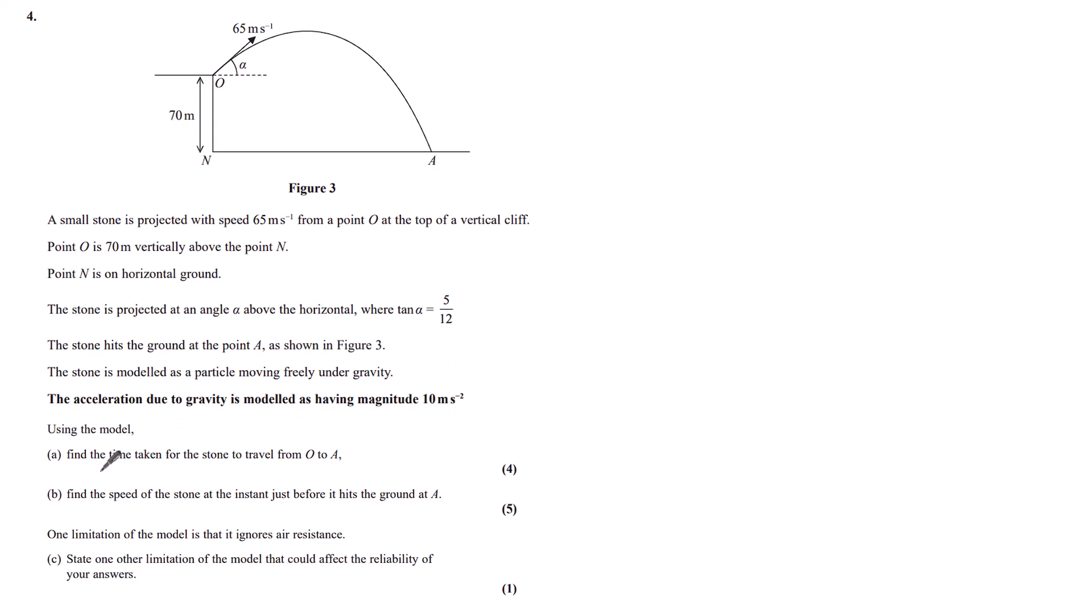Using the model, part A: find the time taken for the stone to travel from O to A. Okay, right. Well, the first thing I want to do here is I'm going to look at this tan alpha, which is 5 over 12. Tan, remember, is opposite over adjacent. And I just so happen to know that 5, 12, 13 is a Pythagorean triple. So the hypotenuse of this right-angled triangle would be 13. And so I'm going to start by just writing down my sin alpha and cos alpha. Remember, mechanics questions will commonly use angles that involve Pythagorean triples. These can always be found on a calculator if you wish. This is just something I like to do.